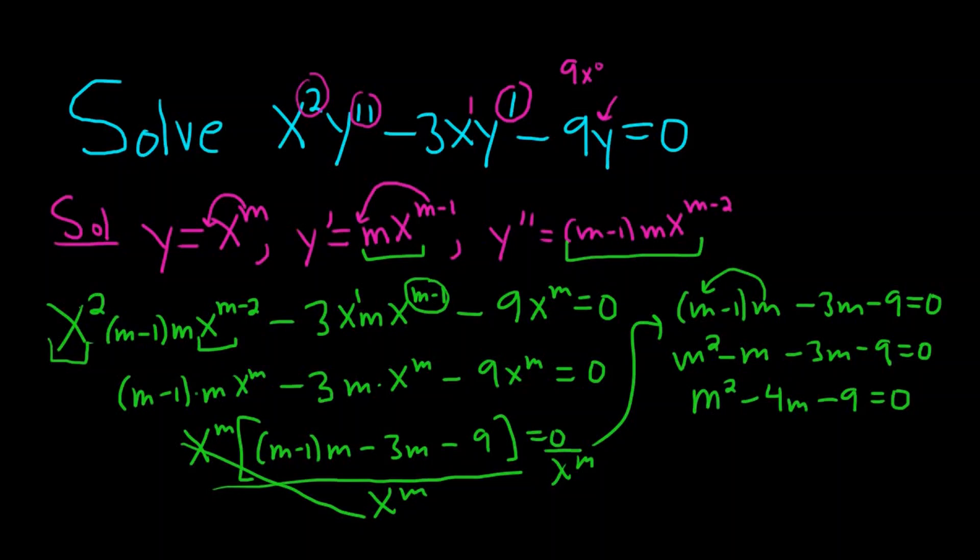So now we have a quadratic equation that we have to solve. I guess we could use the quadratic formula. Let's complete the square. That might be easier. So to complete the square, first maybe we can add the 9 to the right-hand side.